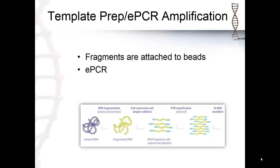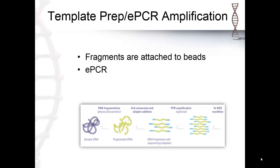The fragments generated during library preparation are attached to beads and amplified using emulsion PCR. Beads coated with complementary primers are mixed with a dilute aqueous solution containing the fragments to be sequenced, along with the necessary PCR reagents. This solution is then mixed with oil to form an emulsion of micro-droplets. The concentration of beads and fragments is kept low enough such that each micro-droplet contains only one of each fragment, and clonal amplification of each fragment is then performed within the micro-droplets.